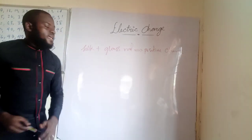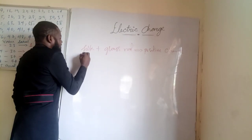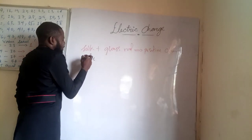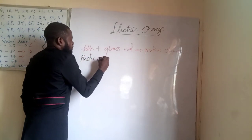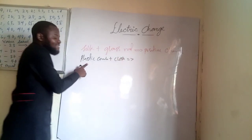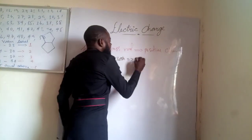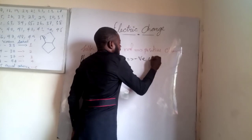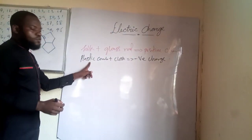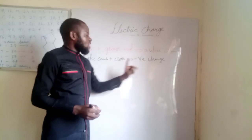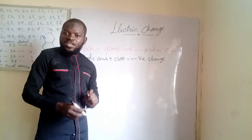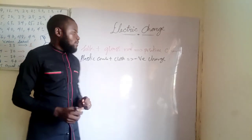For example, if you rub silk and a glass rod together, the glass rod becomes positively charged. Because charge is not created or destroyed but acquired, when the glass rod acquires a positive charge, the silk becomes negatively charged. Similarly, when you rub a plastic comb with cloth, the plastic comb becomes negatively charged while the cloth becomes positively charged.